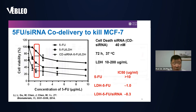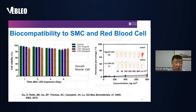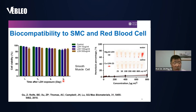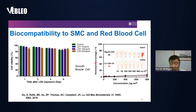Magnesium-aluminum LDH is highly biocompatible. For smooth muscle cells at very high concentration — 500 micrograms per ml — incubated for six days, cell viability remains above 90%, meaning LDH alone as a carrier does not affect cell viability. LDH is also very compatible with blood: at concentrations up to 800 micrograms per ml, the hemolysis rate is less than 10%, confirming the excellent biocompatibility of LDH nanoparticles.